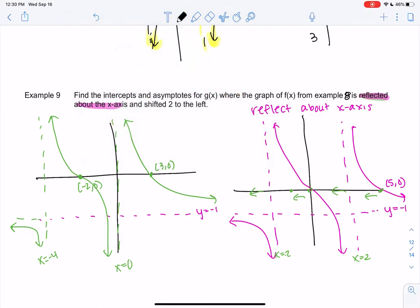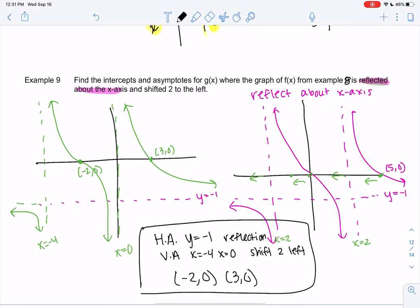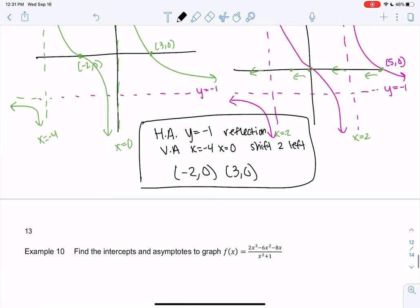So my asymptotes have all moved. My horizontal asymptote is now at y equals negative 1. That was from the reflection. The vertical asymptotes got shifted 2 to the left. So now it's negative 4 and 0. And then my zeros are also (-2,0) and (3,0). So everything just moved. So we can still practice shifting from chapter 2. That was in 2.2 if you want to go back to some shifting. And let's do a graph from scratch.